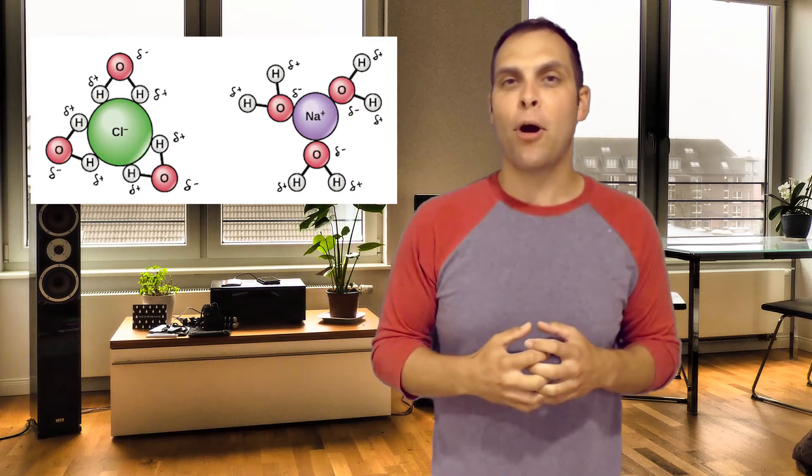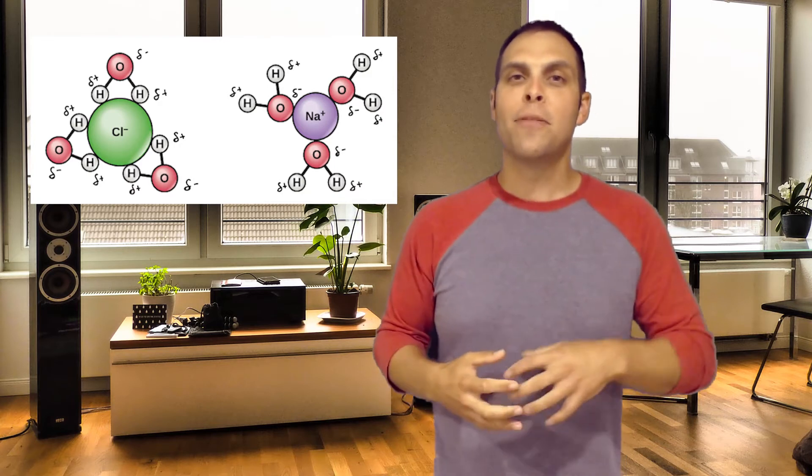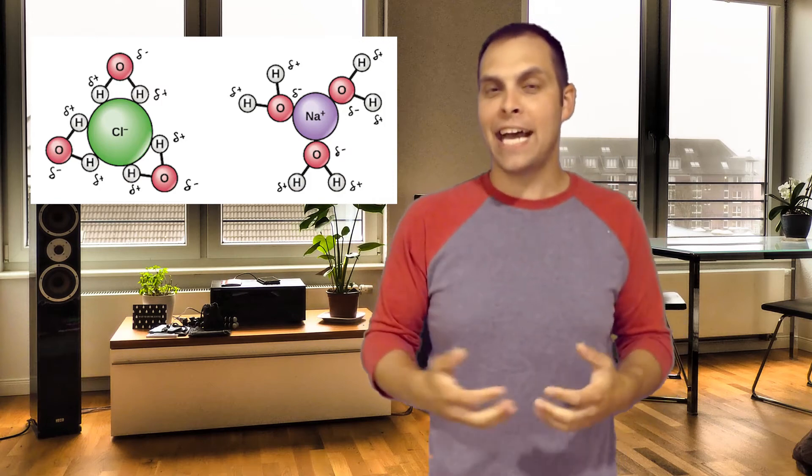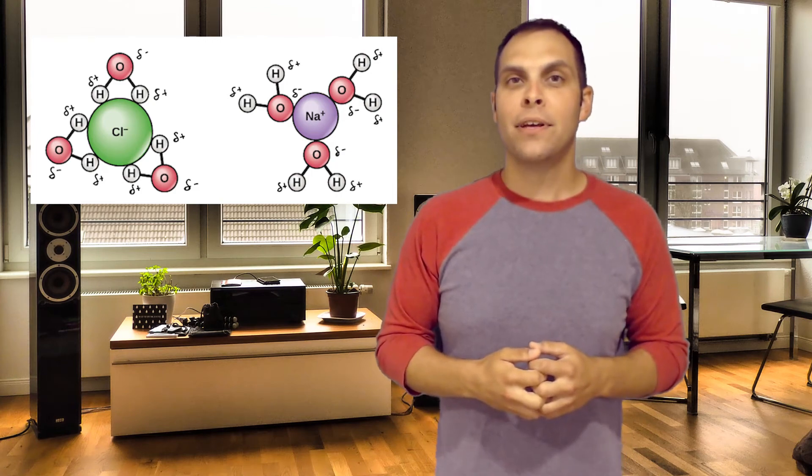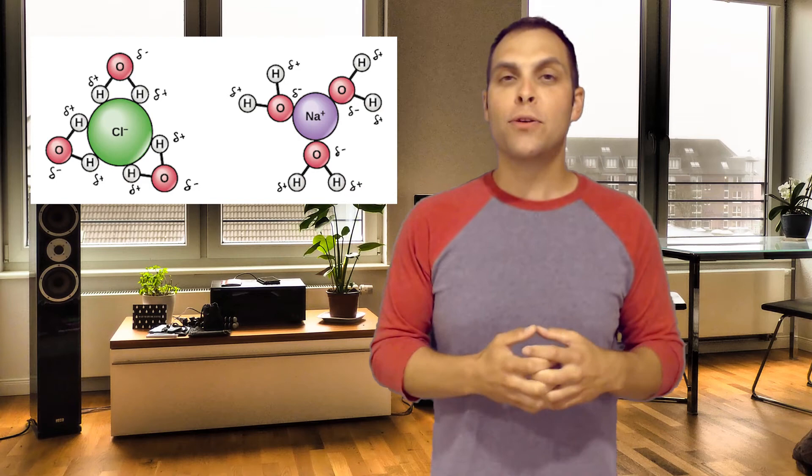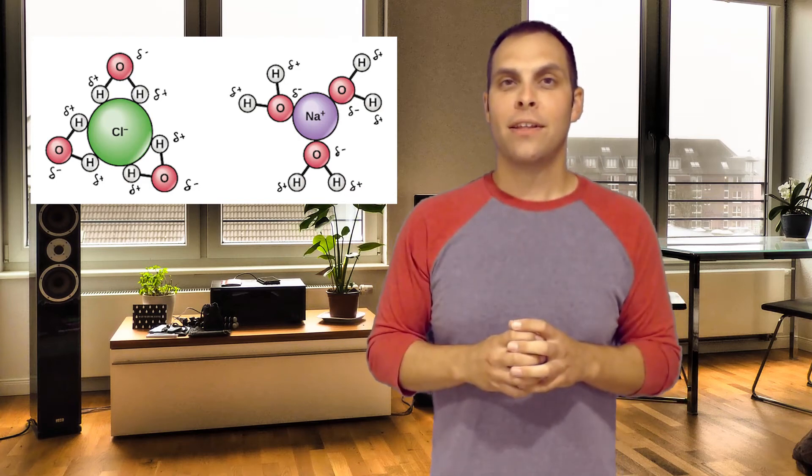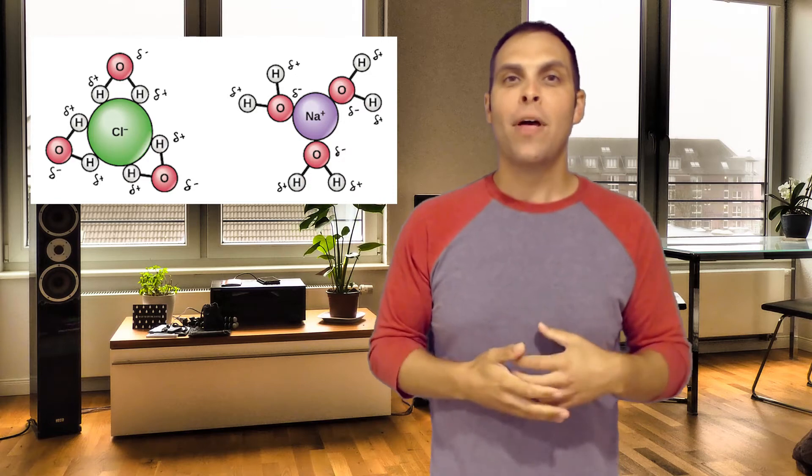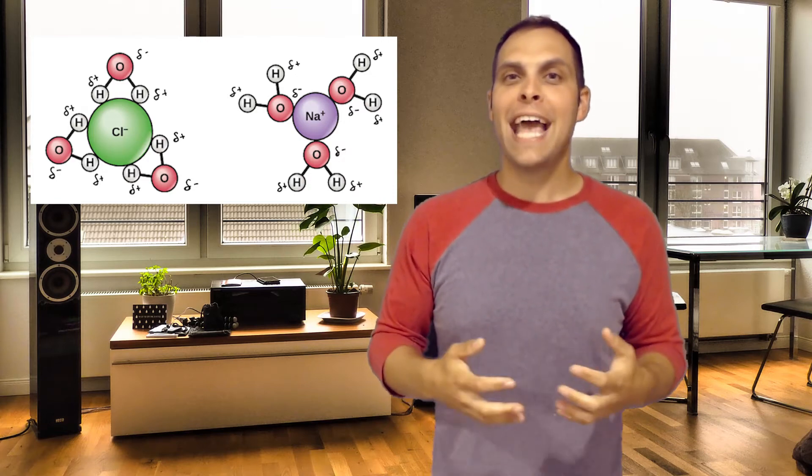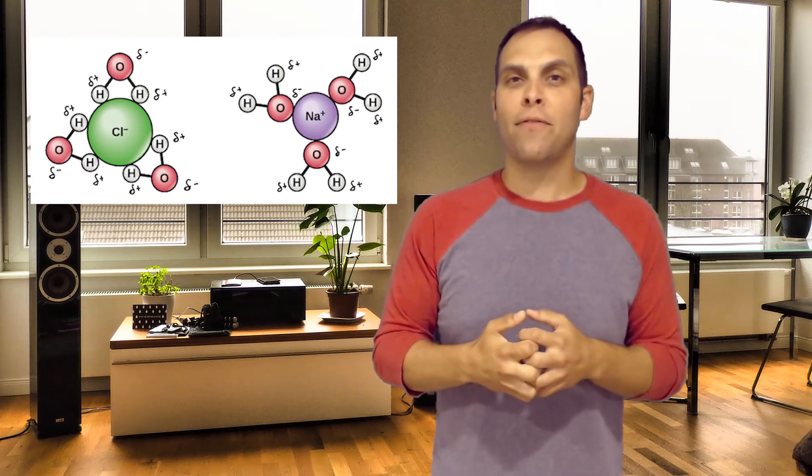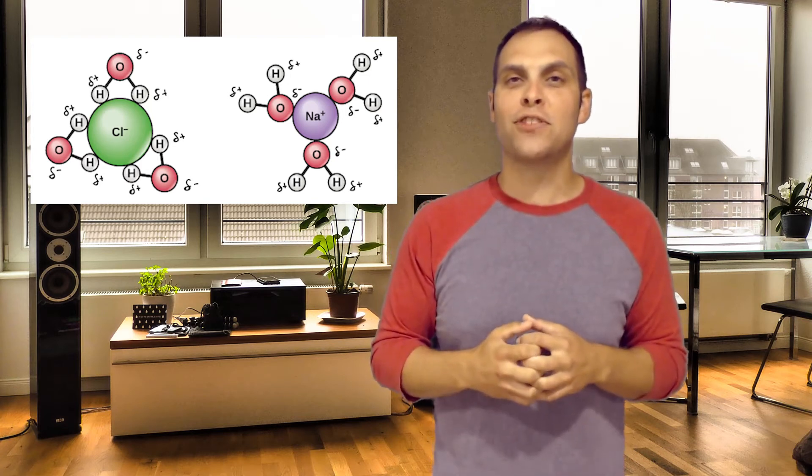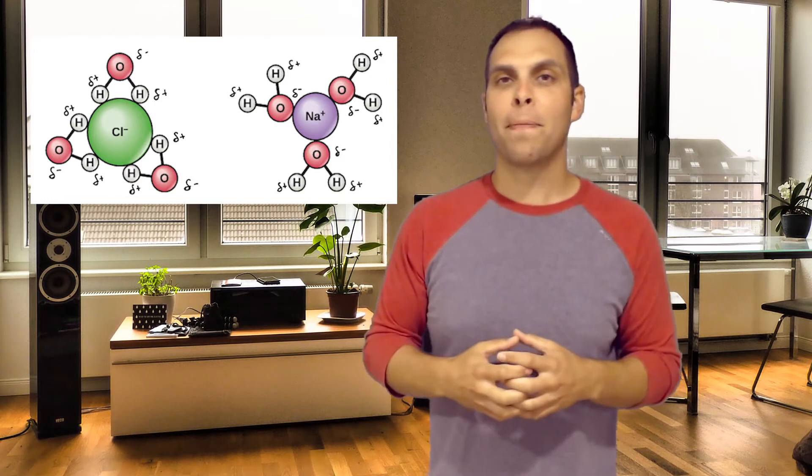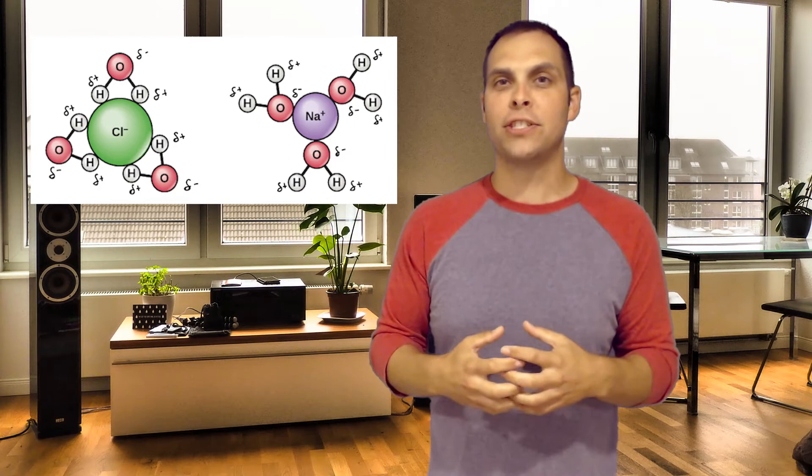Remember those partial charges that water molecules have. The partial positives on the hydrogen, the partial negatives on the oxygen. Well, when something that has partial charges or whole charges, like the cations and anions that make up an ionic compound, enter into an aqueous solution, one that contains water, those water molecules coat those molecules or ions that come into the solution and shield them, hiding their charges. For example, if we're looking at sodium chloride, the negatively, partially negatively charged regions of the water molecules will help to shield the positive charge of the sodium cation. Whereas the partially positive charges around the hydrogen pole of the water molecules will shield the negatively charged chloride anions.